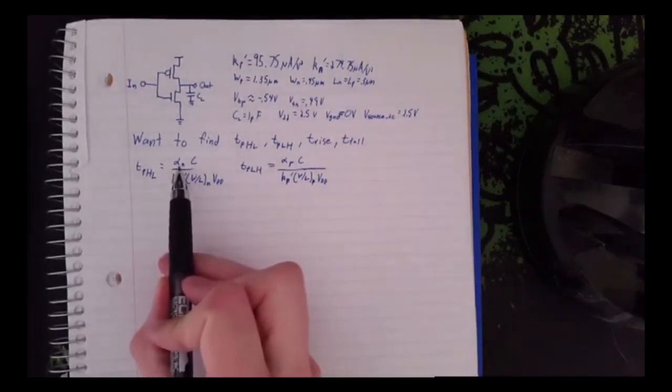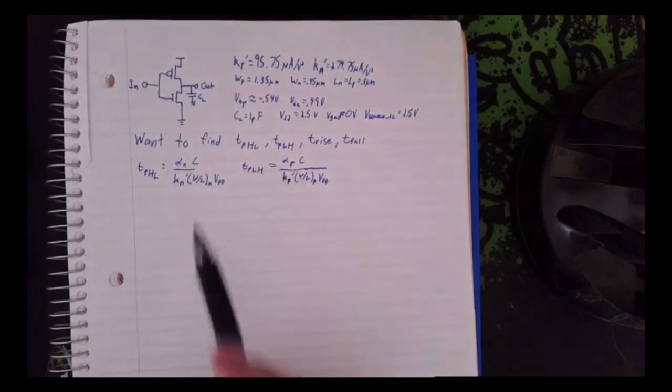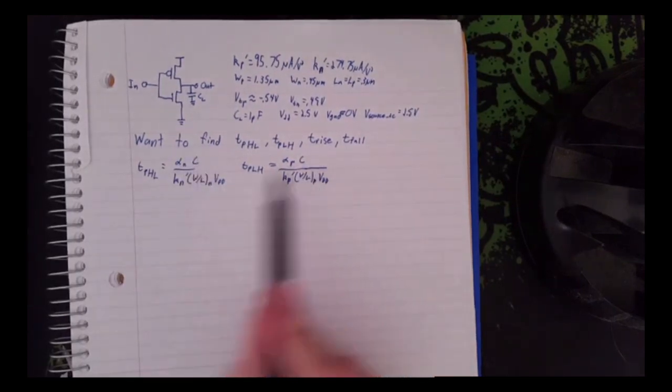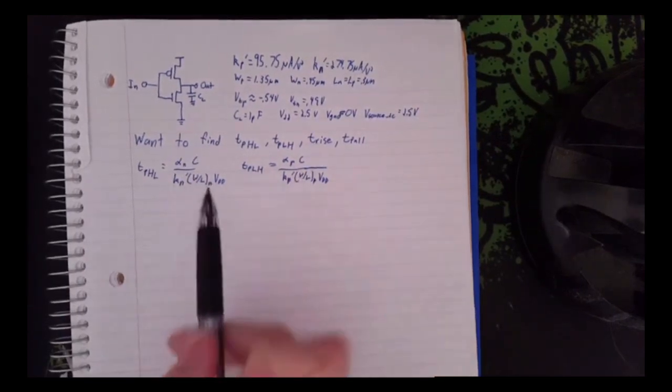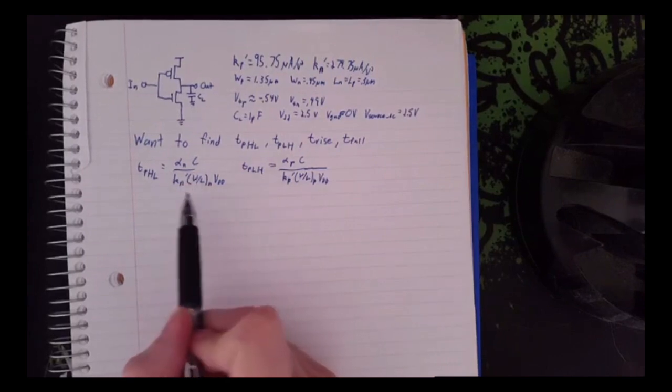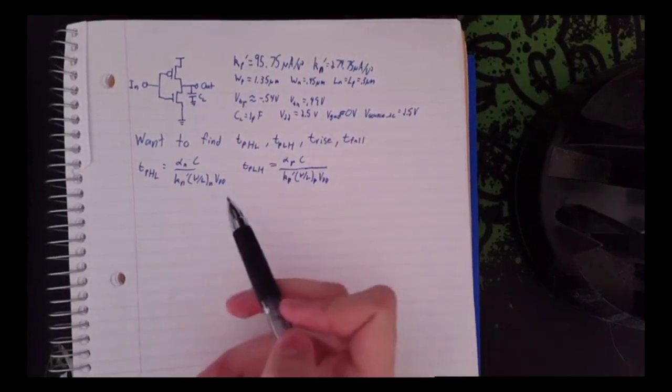So you can see we have these constants here, alpha n and alpha p, and then we have the load capacitor and it's divided by the KN prime times W over LN times VDD.